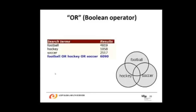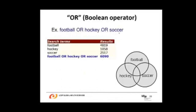Let's review the OR Boolean operator. If you enter, for example, football OR hockey OR soccer in the search box, it will include all the articles with football, all the articles with hockey, and all the articles with soccer. It does not matter if it's both football and soccer only — it includes everything that has the word football, or the word hockey, or the word soccer.